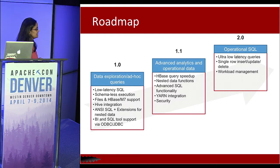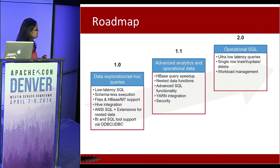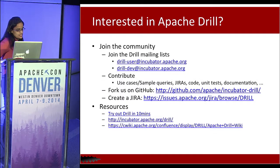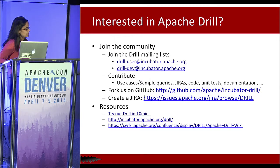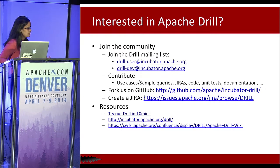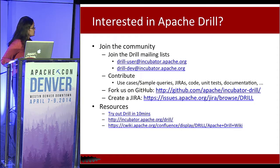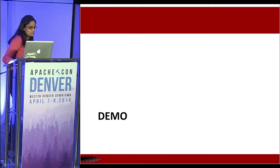In version 1.1, the plan is to focus on performance optimizations for HBase, expand push-down functionality, provide a comprehensive nested data API to let users leverage Drill's architecture for nested data, and add standard enterprise features like YARN integration and security. The long-term idea is a single query layer that can handle both analytics and operational use cases — point queries with 10-millisecond response times. Products like Trafodion by HP and Phoenix are pursuing similar directions. Join the community via the mailing lists, share queries for testing, and check the documentation.